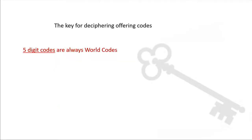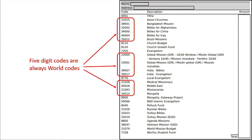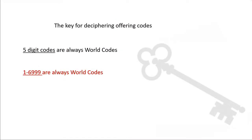Five-digit codes are always world codes. World codes are any that are not local or conference. Notice the five-digit codes here in this Adventist Giving donation — if you see a five-digit code for evangelism, you know it's not a donation to your local church evangelism fund. Georgia Cumberland Conference is using three and four-digit codes, so in JEWEL, anything between 1 and 6999 is also a world code. I've created a simple code chart that helps you convert the five-digit codes to four-digit codes for entry into JEWEL.